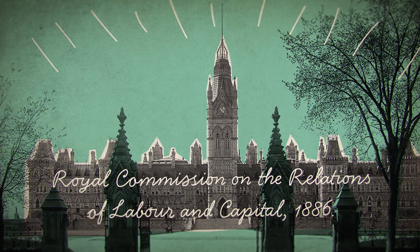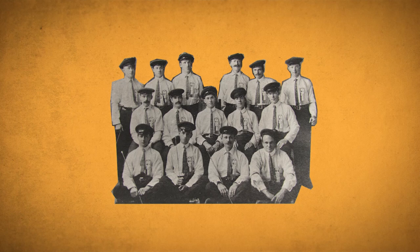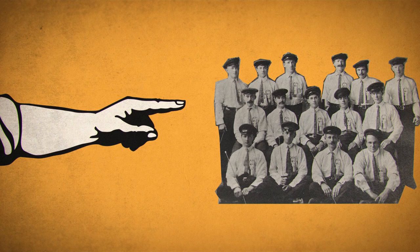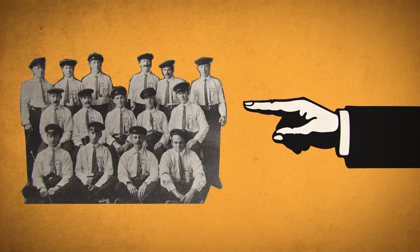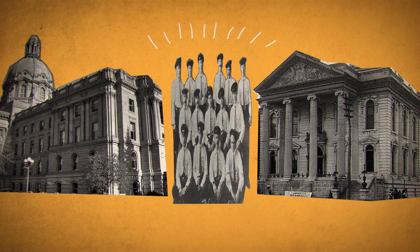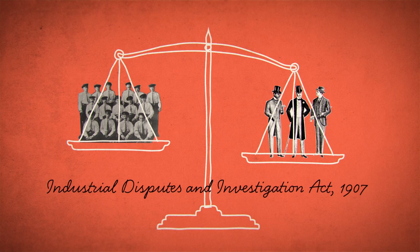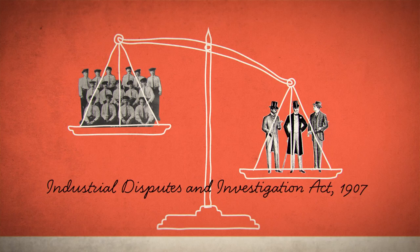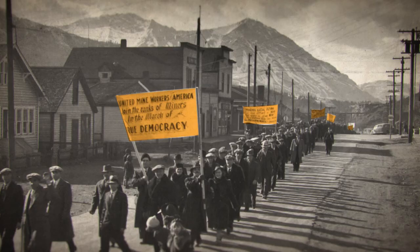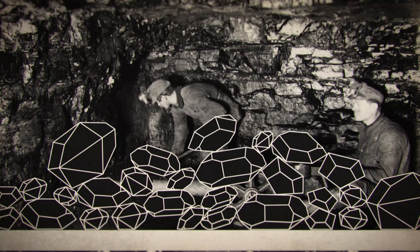The new unions faced many obstacles. First, craft unions expelled their own members if they also joined an industrial union. Secondly, employers could easily fire employees suspected of organizing a union. And of course, governments and courts frequently intervened in labour conflicts on behalf of employers to protect the so-called industrial peace. Even the Industrial Disputes and Investigation Act of 1907 did little to redress the power imbalance between unions and employers. Nevertheless, early industrial unions were able to extract some concessions. Unionized coal miners, for example, forced employers and the state to make their occupation less murderous.